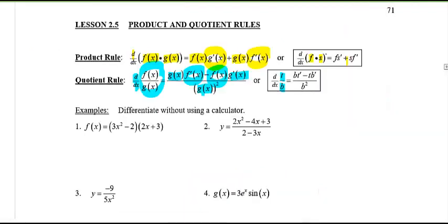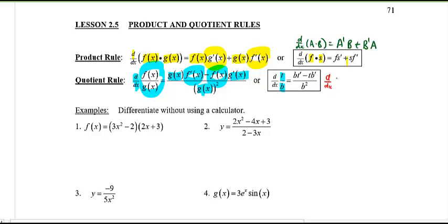Let me recap both formulas. For the product rule: d/dx(a·b) = a′b + b′a. For the quotient rule, remember: low d high less high d low, draw a line, and then below put the square of the low. Sing these in the shower tonight and for the rest of the unit!